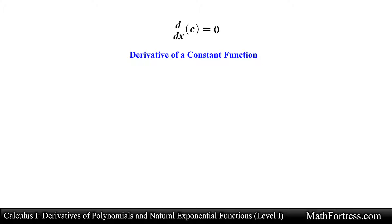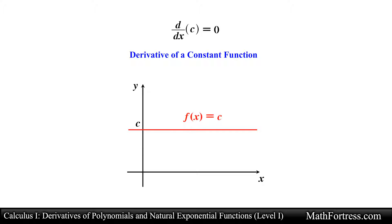Let's start with our first rule: the derivative of a constant function. Recall that the derivative can be geometrically interpreted as the slope of the tangent line to the curve y equals f at a given point. If we graph a general constant function of the form f equals c, where c is a constant, notice that it is a horizontal line, meaning it has a slope of 0. Since the derivative is the slope of the tangent line at every point on the curve, the derivative of a constant function is equal to 0.